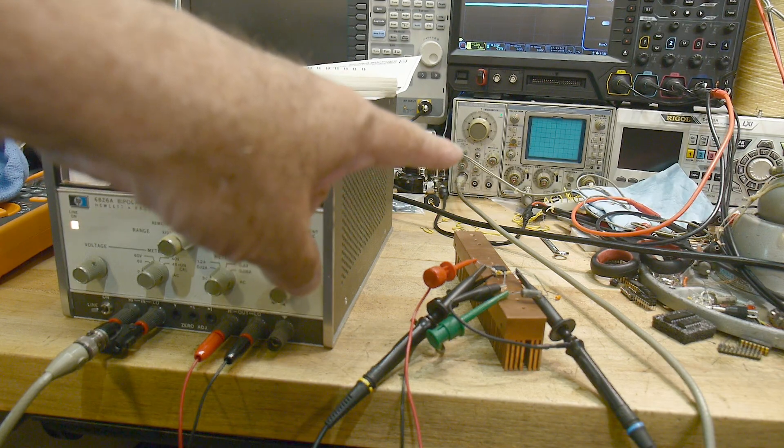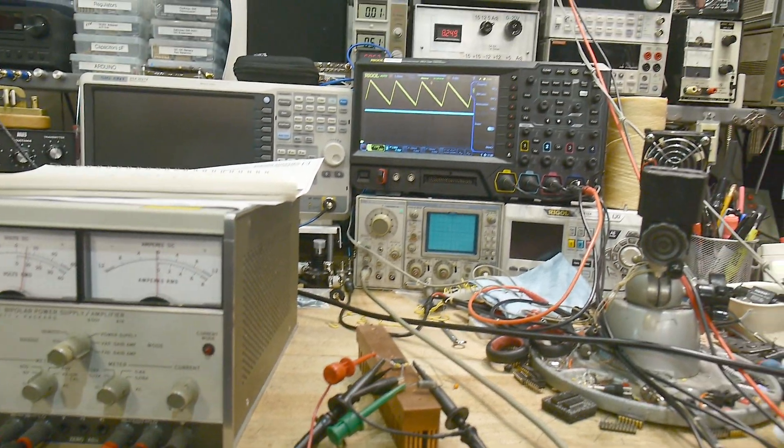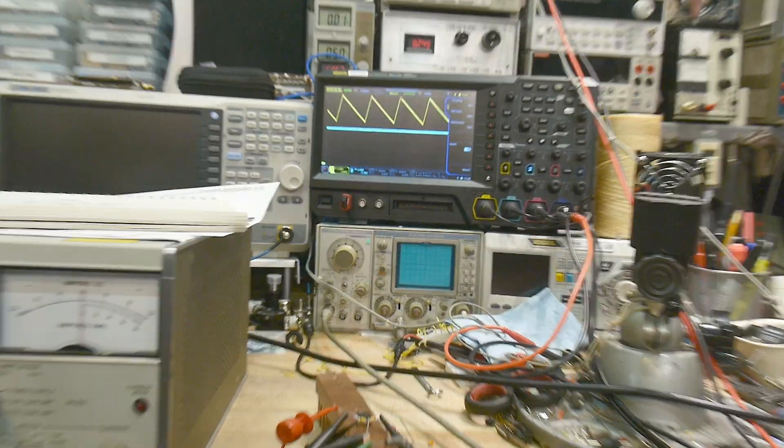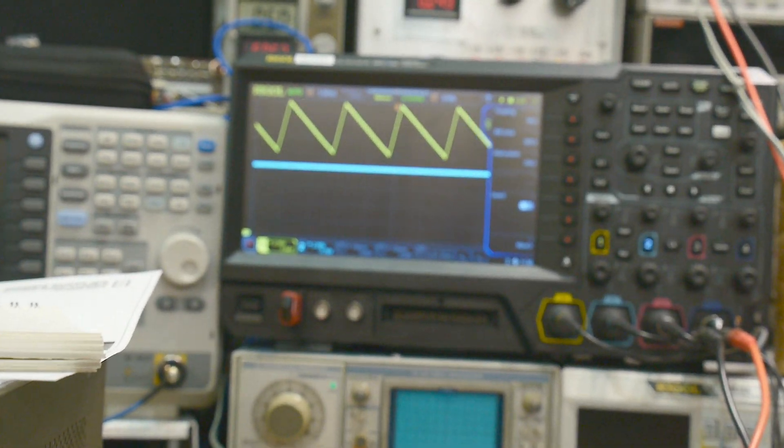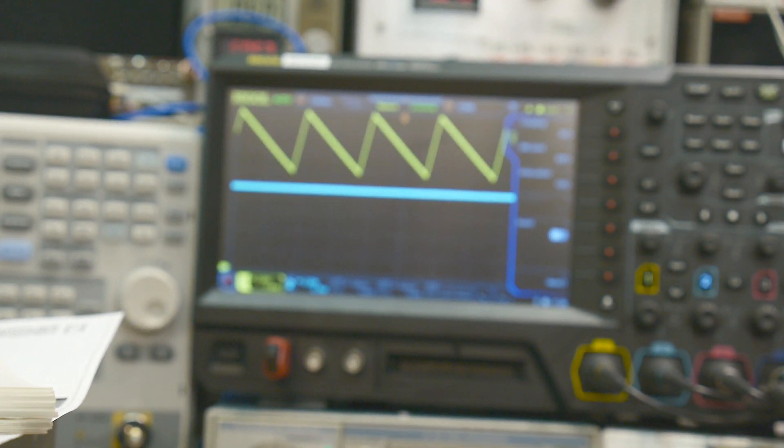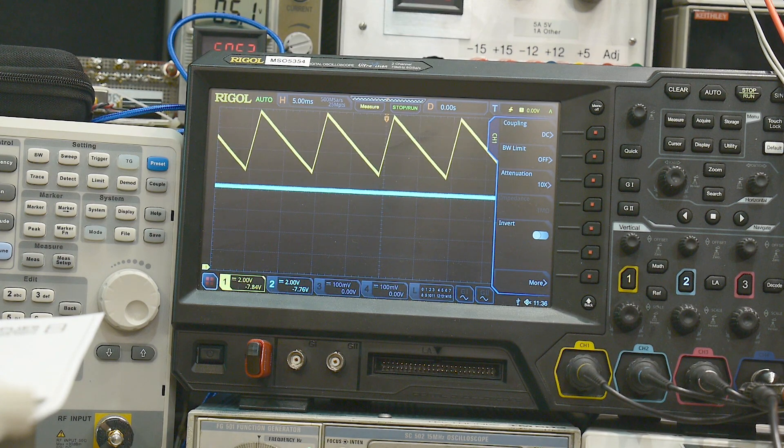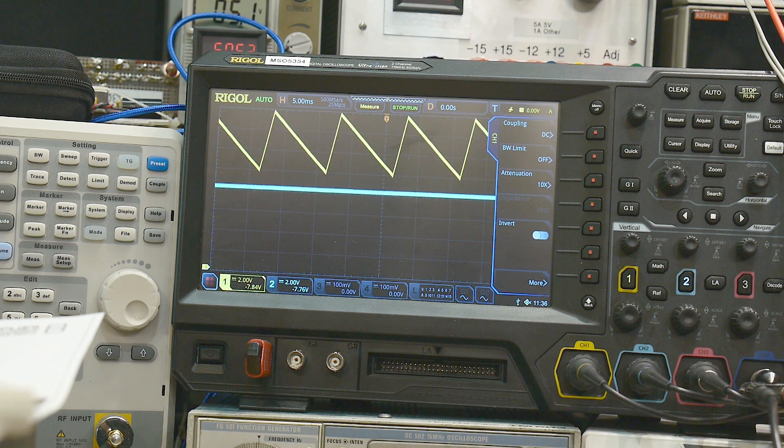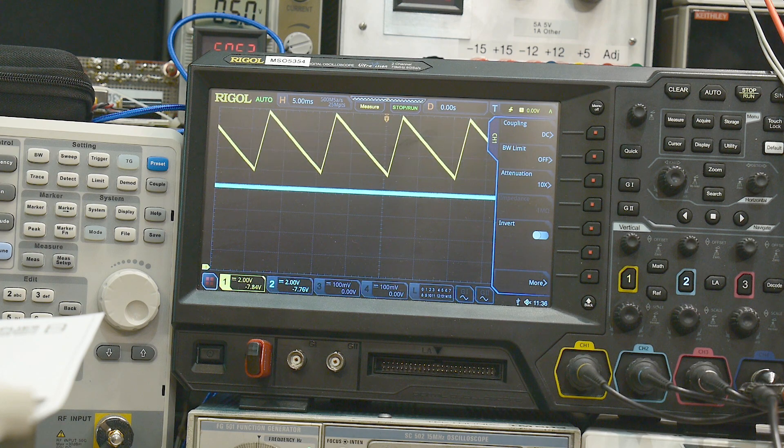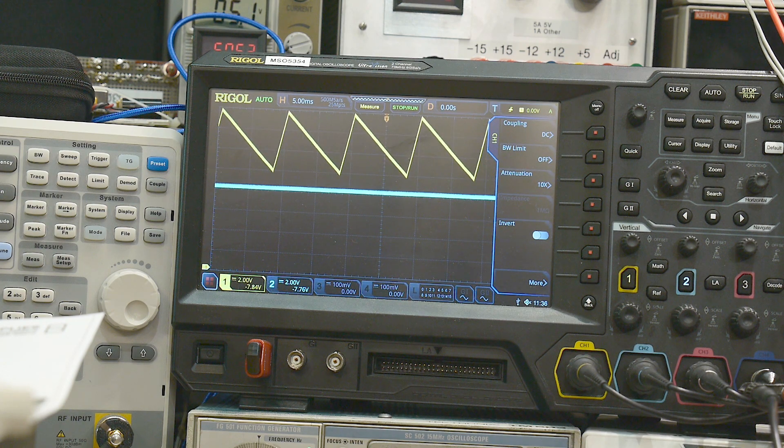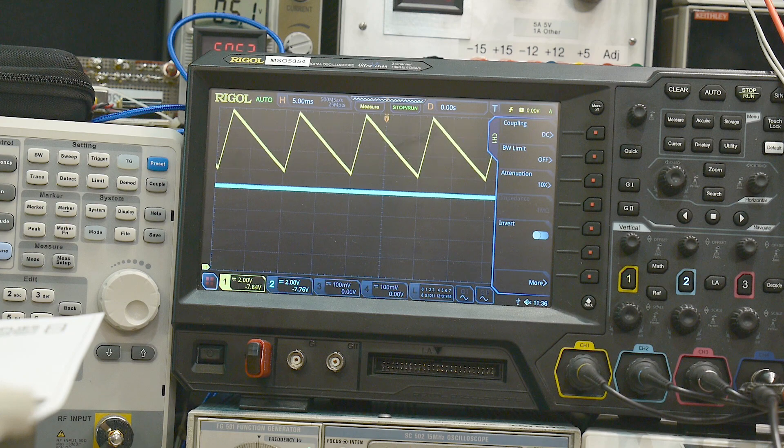I'm going to be using this function generator down here and I am going to be inputting the yellow trace. What it is is a ramp with an offset, and so it's mimicking ripple. The ripple never goes below 10 volts, and so the 8-volt regulator is regulating just fine.